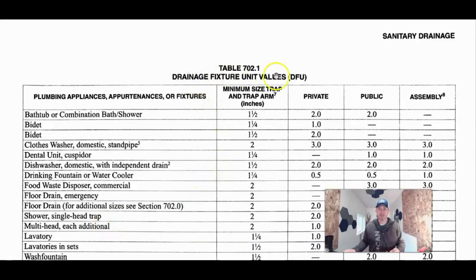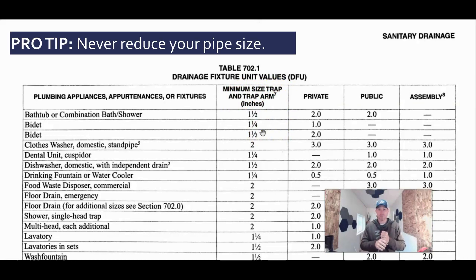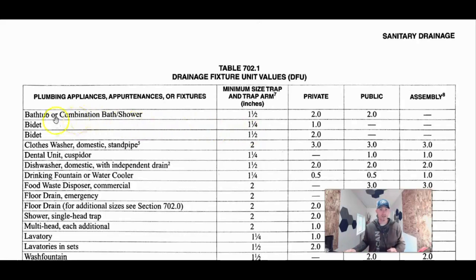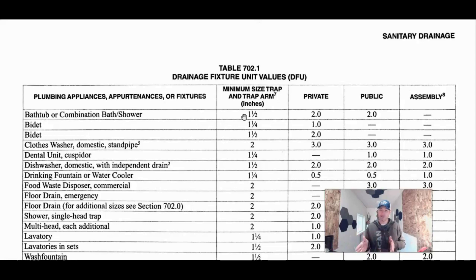Here are drainage fixture unit values — this is the minimum size trap and trap arm. You can't ever reduce, so once you've started with a pipe size you can't go from two inch to inch and a half. Once you see what the trap arm size is, that's the minimum size the drain needs to be, unless stated in this table. A bathtub or bath shower can be inch and a half — you can run inch and a half all the way to the three inch main, and your vent for that can also be inch and a half.